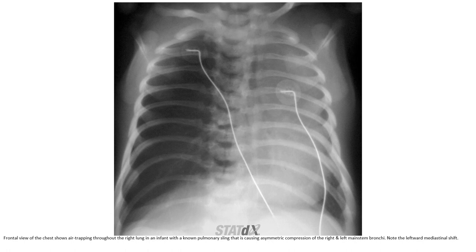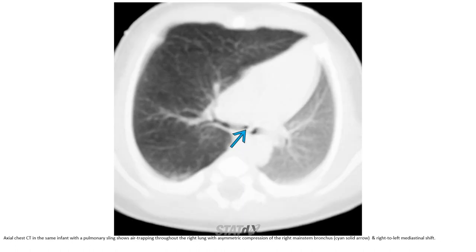Front view of the chest showing air trapping throughout the right lung in an infant with a pulmonary sling, caused by asymmetric compression of the right and left mainstem bronchi. Note the left-ward mediastinal shift. Axial chest CT in the same patient with pulmonary sling shows air trapping throughout the right lung with asymmetric compression of the right mainstem bronchus and right-to-left mediastinal shift.